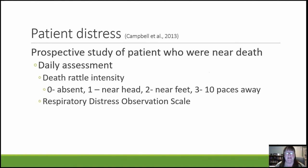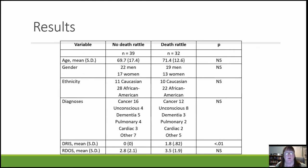I undertook a study to answer whether the patient themselves has distress from death rattle — something not previously measured. In this prospective study of patients near death, once daily we assessed for presence of death rattle using a zero-to-three scale: absent, audible near the head, near the feet, or at 10 paces away. We also measured the Respiratory Distress Observation Scale. Half the patients had death rattle, half did not. They were matched in gender, ethnicity, and diagnoses — the only difference was presence of death rattle. The RDOS scores were in the mild-to-none range, with no difference between the two groups.